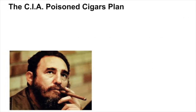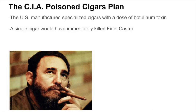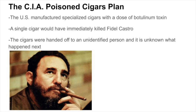The second assassination attempt took place in 1961 and was much more creative than the last attempt. In this attempt, the U.S. manufactured cigars with a dose of botulinum toxin, a deadly poison that would have killed Castro once it was in his mouth. According to the U.S. Senate Church Committee's report, the cigars were then handed off to an unidentified person. After that, the record ended with no further details of the plot provided to the general public.